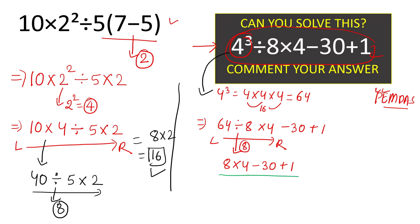Now we multiply next, since multiplication has higher priority than addition and subtraction. 8 times 4 equals 32. So we now have 32 minus 30 plus 1.